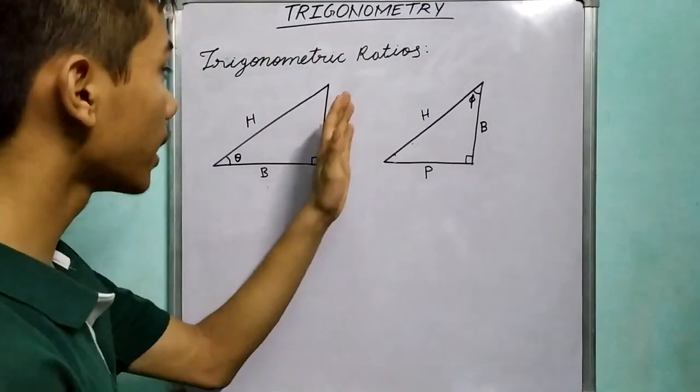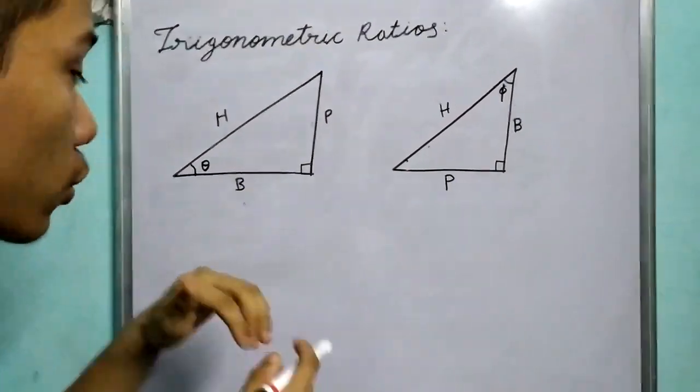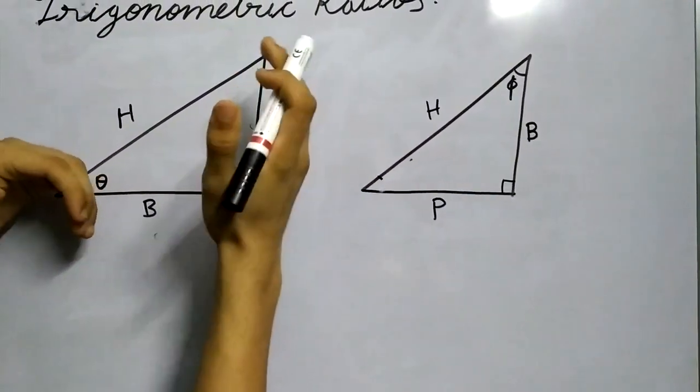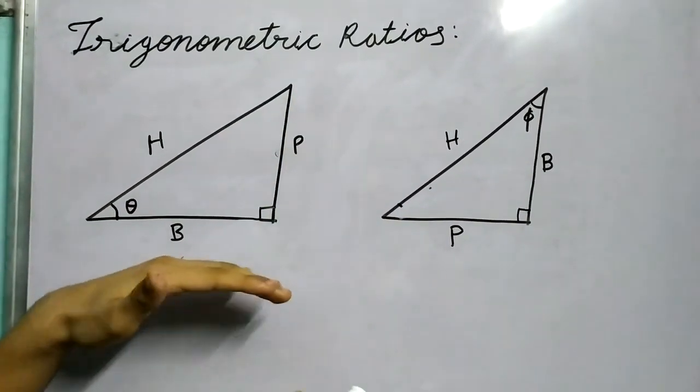First we study what are perpendicular and base with respect to some angle. So say this is an angle, then this will be the perpendicular and this side will be the base.